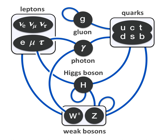In the QCD Lagrangian, ψᵢ is the Dirac spinor of the quark field where i represents color, γᵘ are the Dirac matrices, Gᵃᵘ is the 8-component SU(3) gauge field (a = 1,...,8), tᵃᵢⱼ are the 3×3 Gell-Mann matrices — generators of the SU(3) color group — Gᵃᵘᵛ are the field strength tensors for the gluons, and Gₛ is the strong coupling constant.